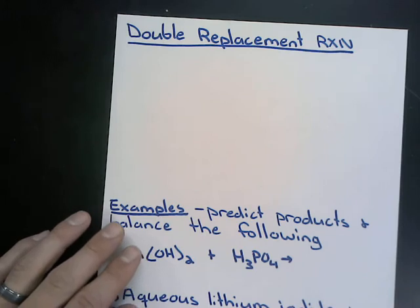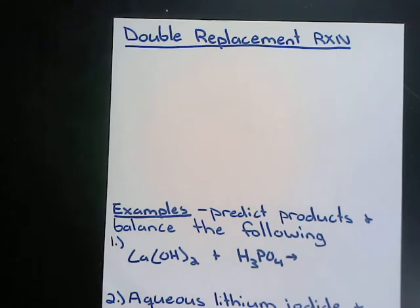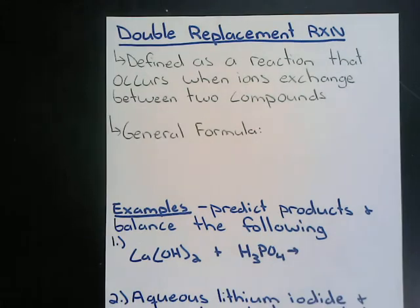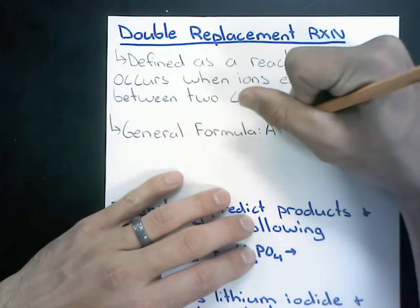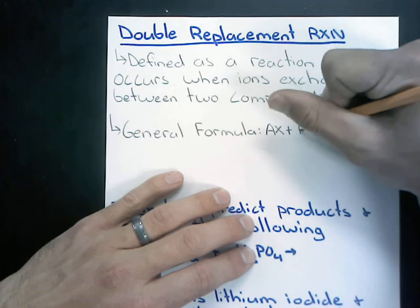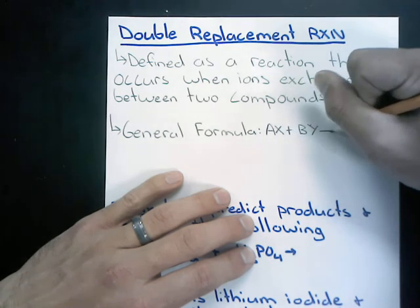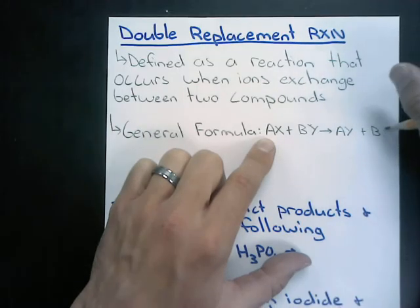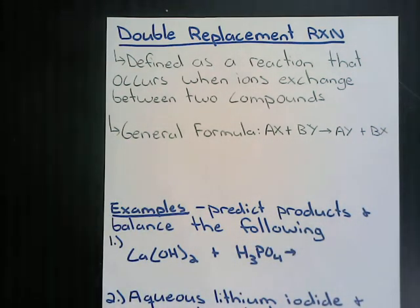Our last type of reaction is a double replacement reaction. Double replacement reactions are defined as reactions that occur when ions exchange between two compounds. The generalized formula is: compound AX reacts with compound BY to form AY and BX — essentially the compounds switch partners.